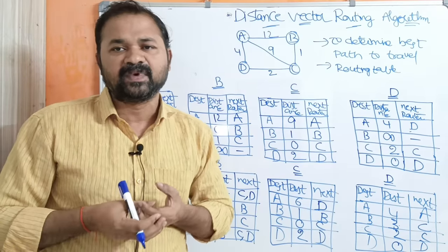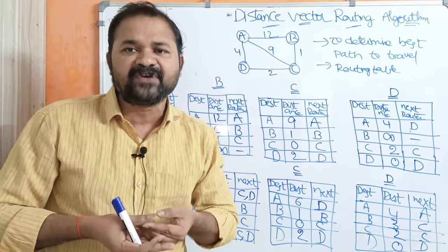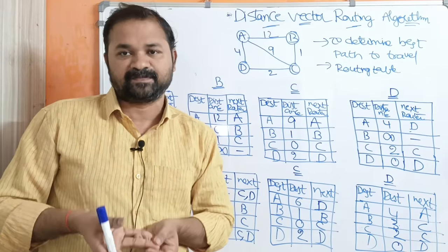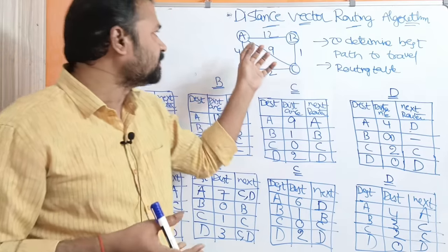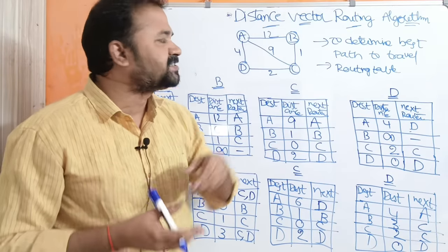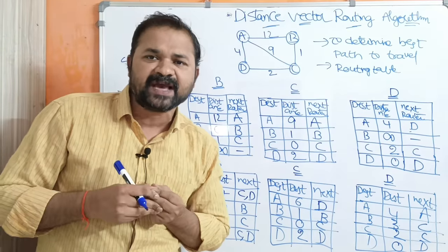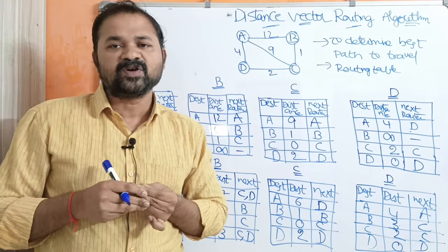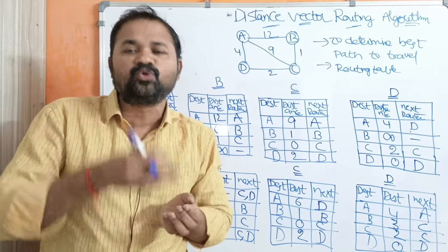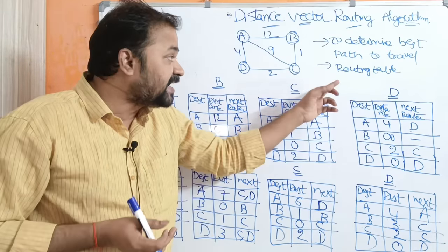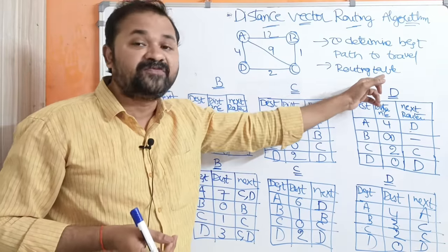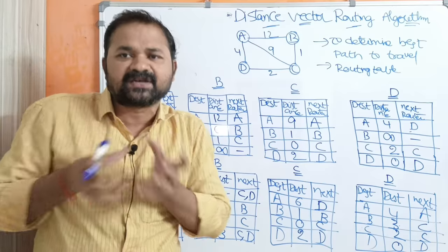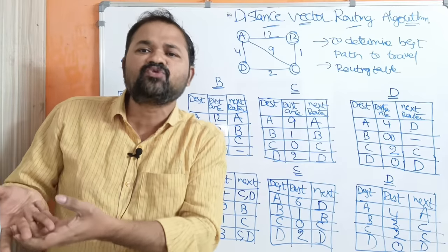The routing table information will be updated periodically. That is why we can call distance vector routing algorithm a dynamic routing algorithm — because every router will share its routing table information with other routers, and other routers will simply update their routing tables.